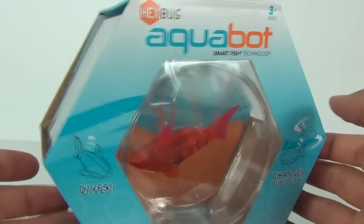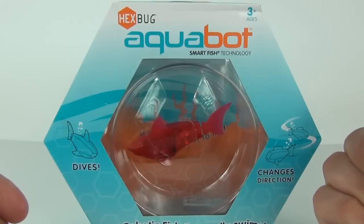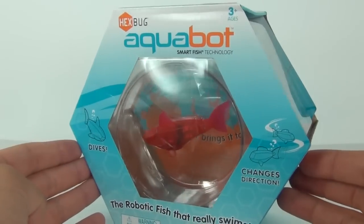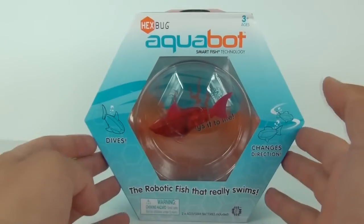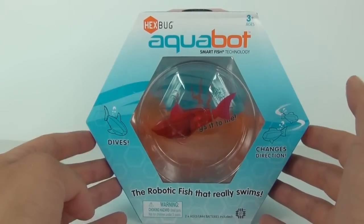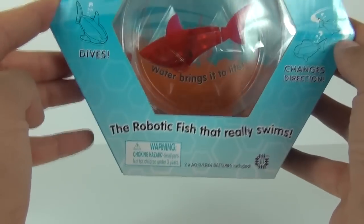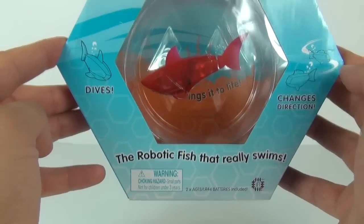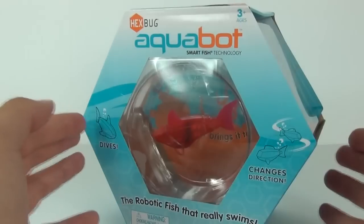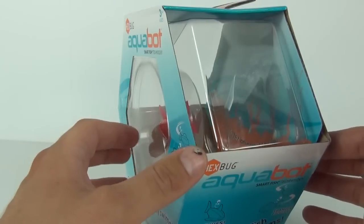All you need to do is fill it up with water, put your fish in, and it will swim. It is such a cool toy. This has a price tag of £9.99 here in the UK. The robotic fish really swims, it does change direction and dives as well. How cool is that?